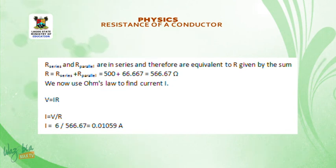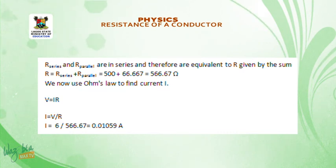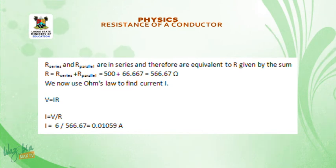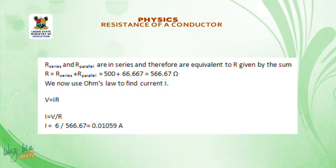Using Ohm's law to find the current: I equals V divided by R equals 6 divided by 566.67. The current in the circuit is 0.01059 ampere, which can be expressed to three decimal places. Remember to include your unit.